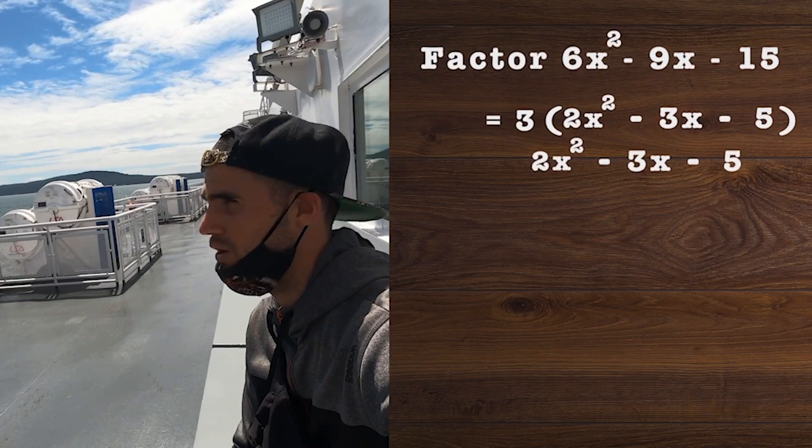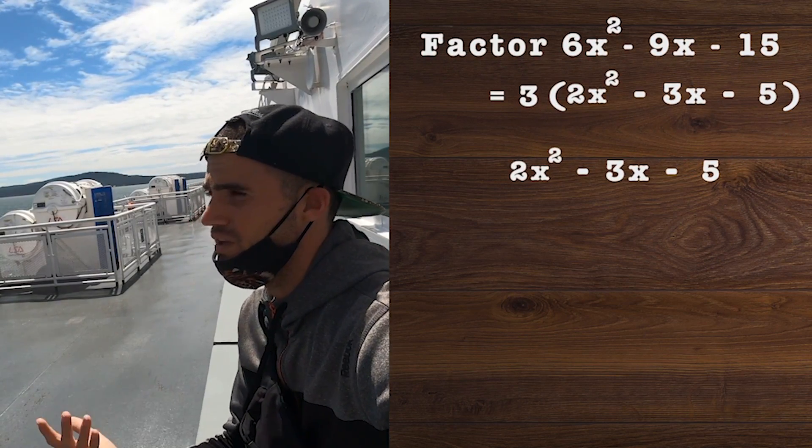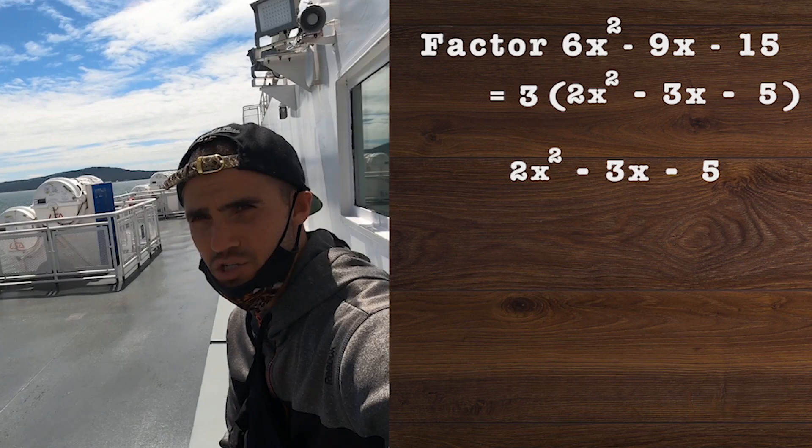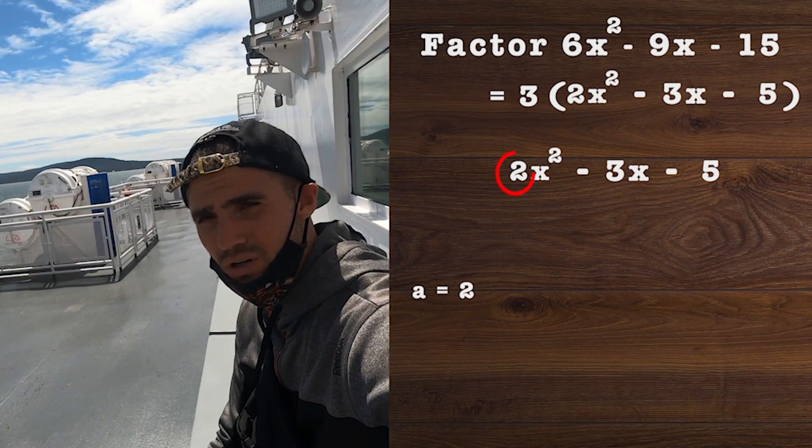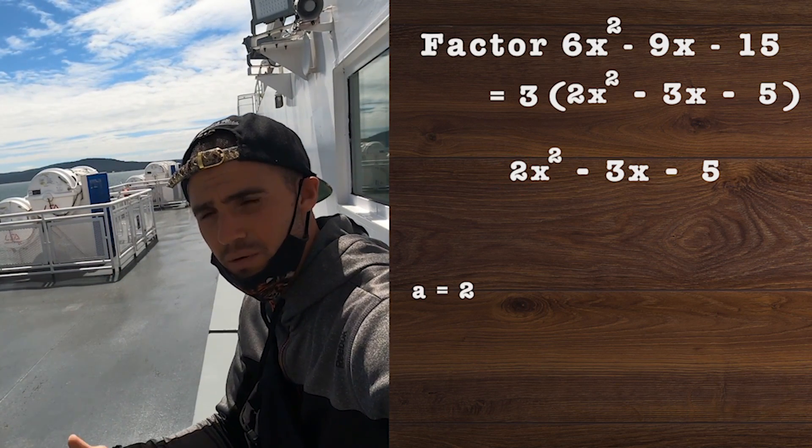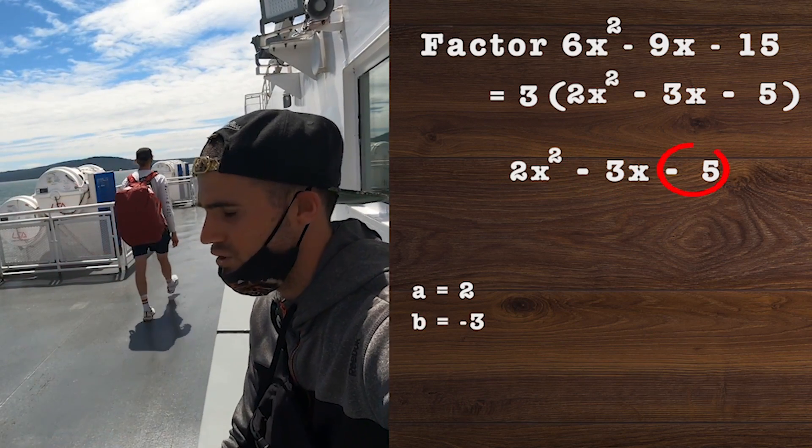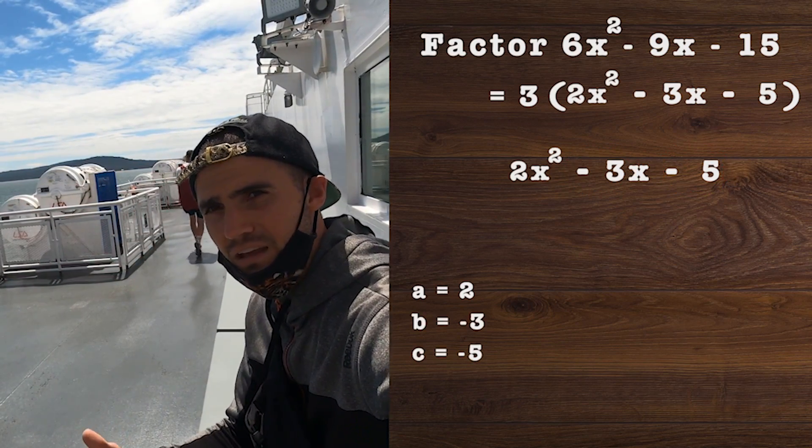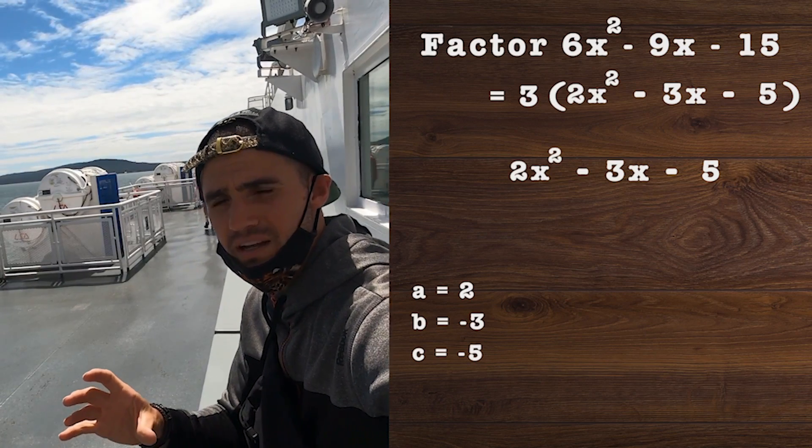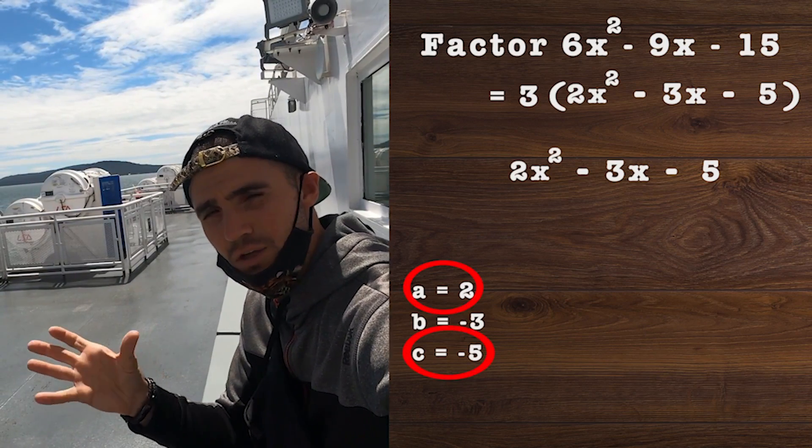We have this quadratic in the bracket, and we can see if we can factor that quadratic further using decomposition. The a value would be 2, the b value would be -3, and the c value would be -5.